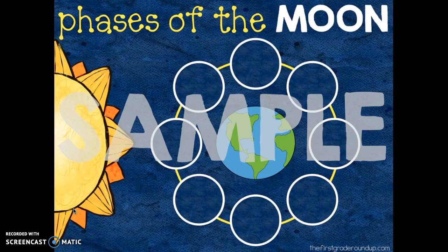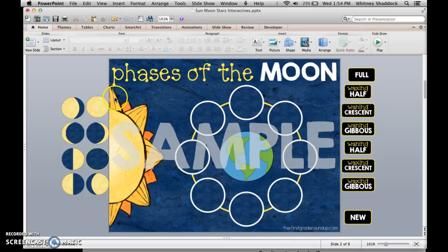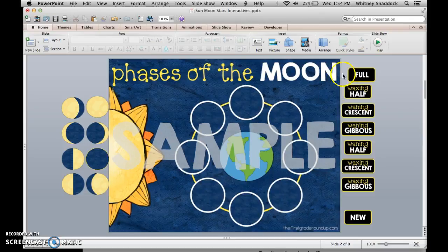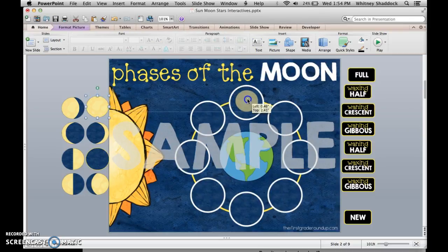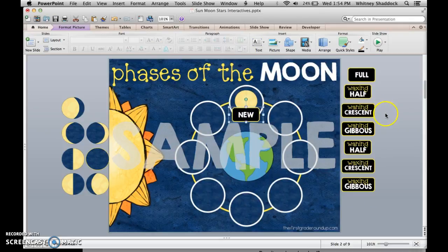The first interactive PowerPoint is the Faces of the Moon. In normal view you'll see all the pictures of the moons plus the labels for each of them. This is for whole group sequencing of the phases of the moon — you can move the moon pictures and the labels, and do this on your smart board very easily.